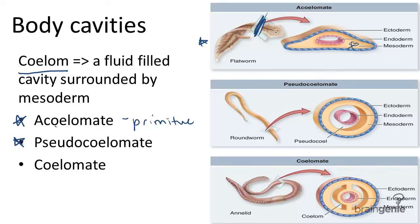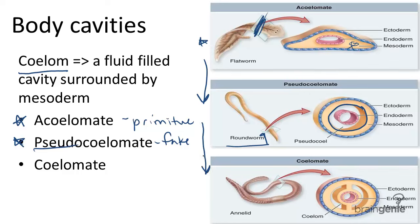Pseudocoelomates, such as the roundworm seen here, maintain a pseudo — meaning fake — coelom. This roundworm only has a cavity that is partially lined by mesoderm, seen here. This organism has more of an advantage than flatworms since it can develop a distinctly separate and more complex body system. So we're getting increasingly complex going down this list.